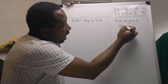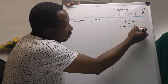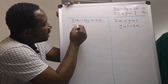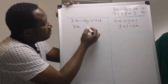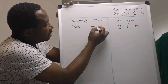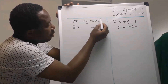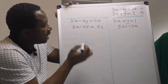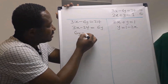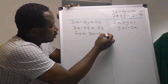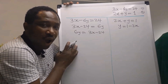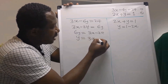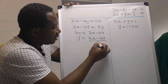For the first equation, y is 1 minus 2x. For the second equation, I will leave 3x, move minus 6y across to get plus 6y, and move 24 across to get minus 24. So 6y is 3x minus 24, and therefore y is (3x minus 24) divided by 6.